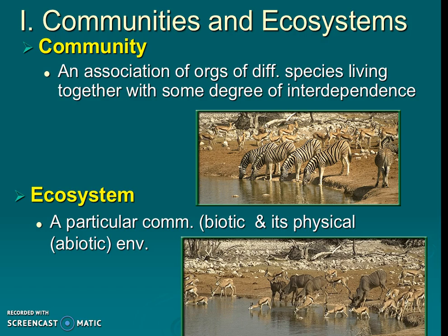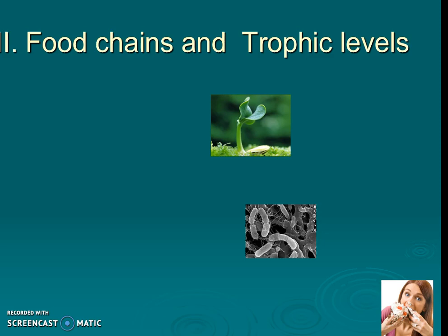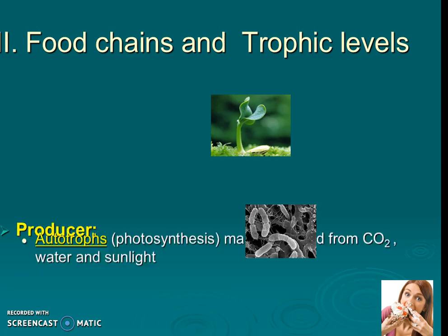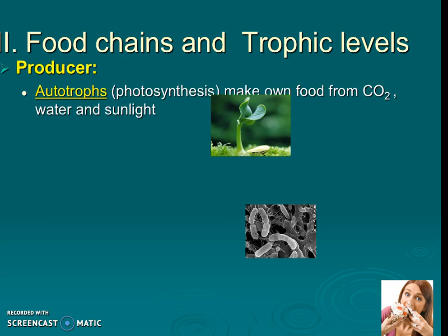Now that we have those definitions, we're going to be referring to a lot of things about communities and ecosystems. The first thing is that within a community, organisms are going to be eating one another, and we will make food chains and trophic levels out of that. An autotroph is something that does photosynthesis and makes its own food using carbon dioxide, water, and sunlight.